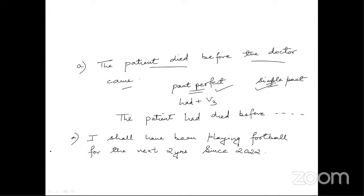Next sentence: 'I shall have been playing football for the next two years since 2022.' Tell me if this sentence is correct or not. A student points out the 'I shall have been' part may need correction, and another suggests 'since' should be 'till.' Is part A wrong or is the error elsewhere?